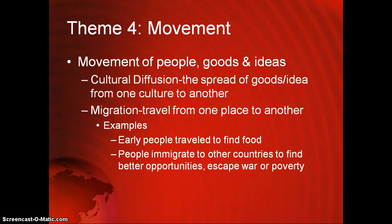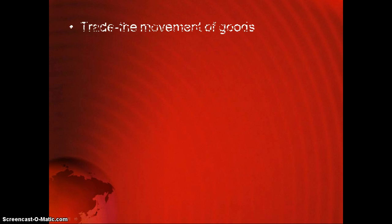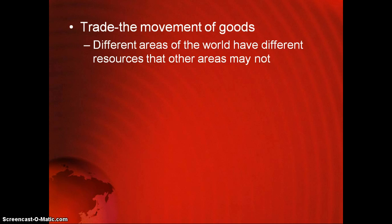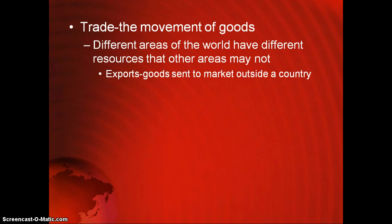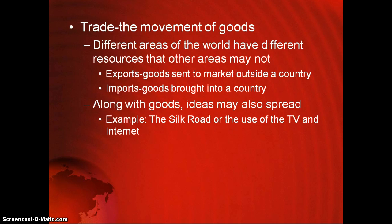People also immigrate to other countries to find better opportunities, to escape war, or to escape poverty. Trade is the movement of goods. Different areas of the world have different resources — one country might have a lot of coal but not a lot of steel, so they trade with other areas to get the goods they need. These goods are either exports, which are goods sent outside a country, or imports, which are goods brought into a country. Along with these goods comes the spread of ideas — cultural diffusion.